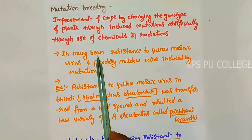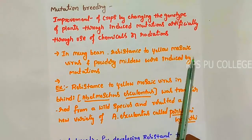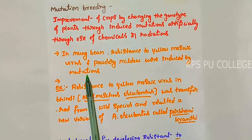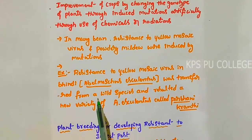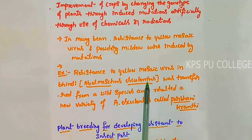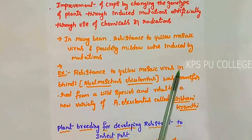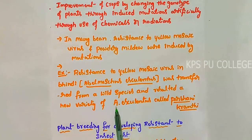For example, in mung bean, resistance to yellow mosaic virus and powdery mildew were induced by mutation. The second example is resistance to yellow mosaic virus in bhindi (Abelmoschus esculentus), which was transferred from wild species. This resulted in a new variety through induced mutation called Parbhani Kranti.